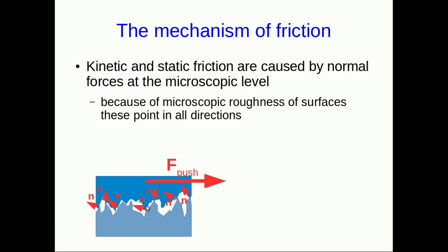And even on that scale, surfaces only touch each other at a few places. And now if you push, these angled normal forces will oppose that push. And if you push hard enough, eventually the bumps on one surface will ride up out of the troughs in the other surface. And they'll start skipping along over each other.